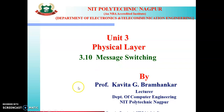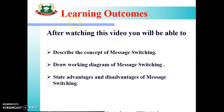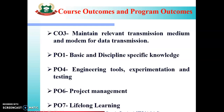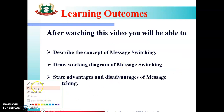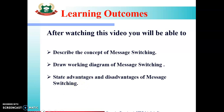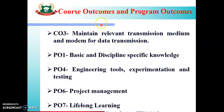Today's topic is Message Switching. It is part of Unit 3, that is Physical Layer. The learning outcomes of these videos are: you will be able to describe the concept of message switching, draw the working diagram of message switching, and state advantages and disadvantages of message switching. Course Outcome that is going to map is CO3: Maintain Relevant Transmission Medium and Modem for Data Transmission.